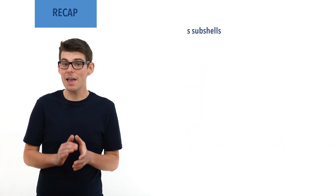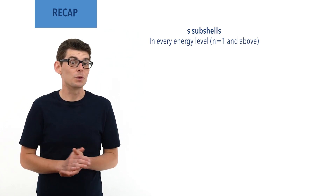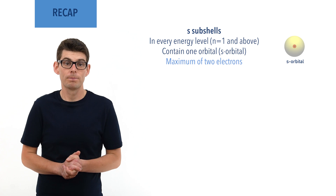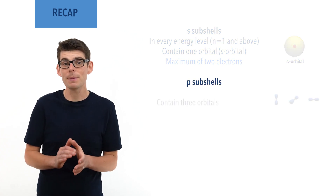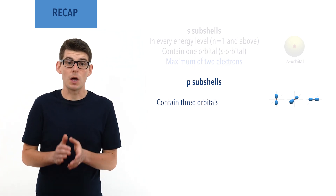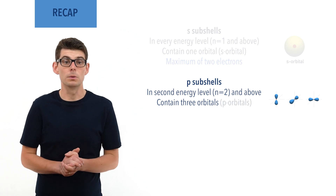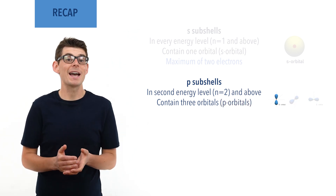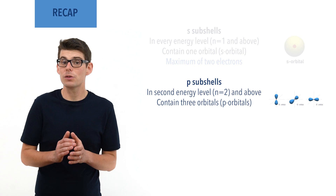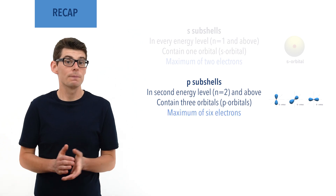S subshells are found in every energy level in an atom and they contain only one spherical shaped orbital called an S orbital. As a result, an S subshell can hold a maximum of two electrons. P subshells contain three dumbbell shaped orbitals that are too big to fit in the first shell, meaning all energy levels apart from the first have a P subshell. The three orbitals in a P subshell are called P orbitals and are labelled as px, py and pz. They all have the exact same shape and energy — only their orientations in space are different. A P subshell can hold a maximum of six electrons, two per P orbital.